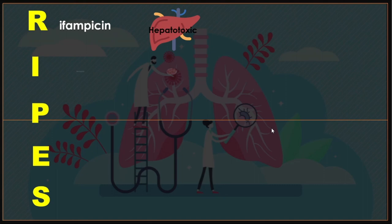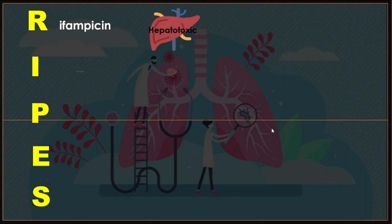I — isoniazid (INH). Isoniazid is the most toxic of the TB drugs and can cause peripheral neuritis. It is a bactericidal agent also used as prophylaxis for neuritis. Side effects include peripheral neuritis, hepatic enzyme elevation, hepatitis, and hypersensitivity.